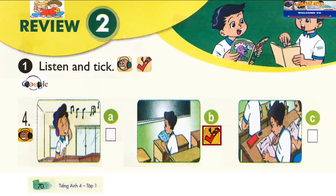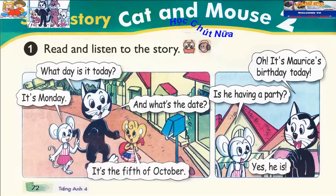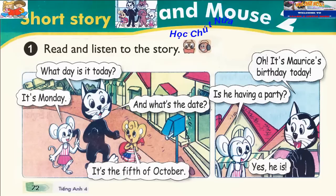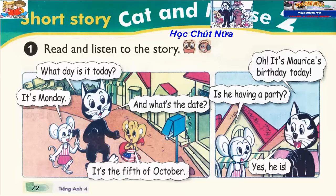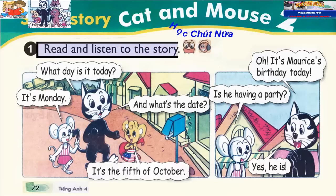Page 72. Short Story. Cat and Mouse, Part 2. Activity 1. Read and listen to the story.